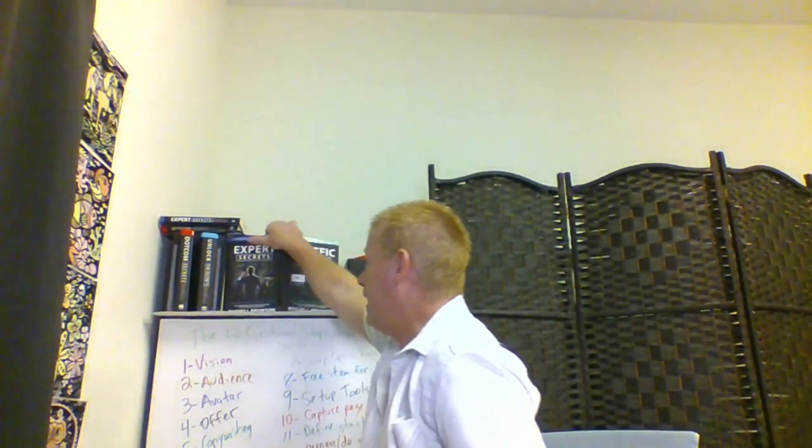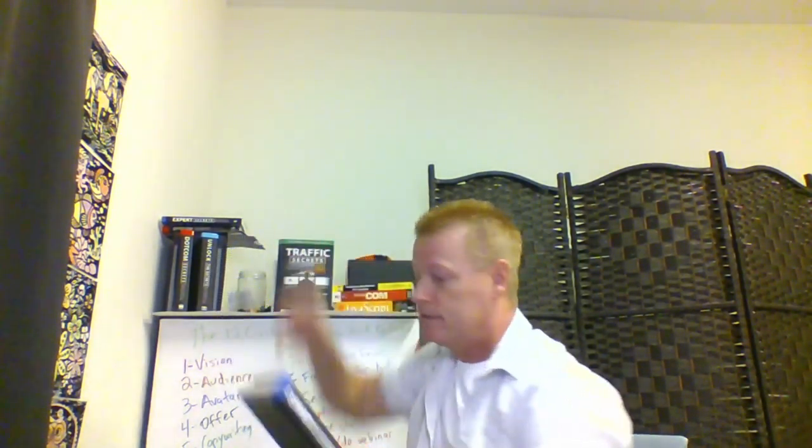You need an origin story to have the perfect webinar. That's something Russell Brunson teaches in the Expert Secrets book. He talks about the origin story, your three secrets, your epiphany — the epiphany bridge, epiphany bridge scripts, and the four core stories. Interestingly, he doesn't really talk specifically about the 'origin story' by that name in the book.